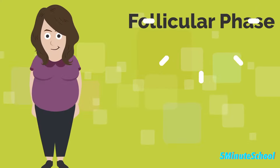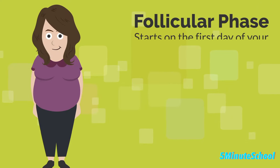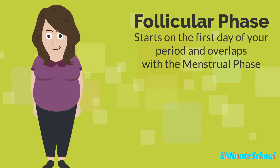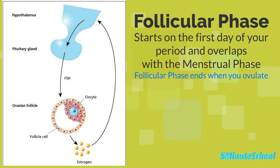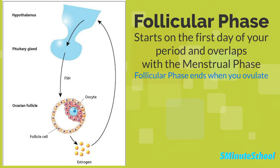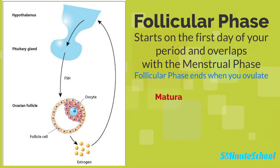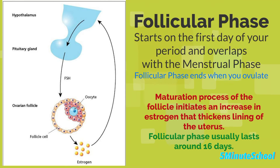The next phase is the follicular phase. This starts on the first day of your period, so it overlaps with the menstrual phase, and it ends when you ovulate. In this phase, the hypothalamus — a part of the brain — sends a signal to the pituitary gland to release follicle-stimulating hormone, abbreviated as FSH. This hormone stimulates the ovaries to produce around 20 small sacs called follicles, each containing a small immature egg. The healthiest egg matures, and this maturation process initiates an increase in estrogen which thickens the lining of the uterus. The follicular phase lasts roughly around 16 days on average.